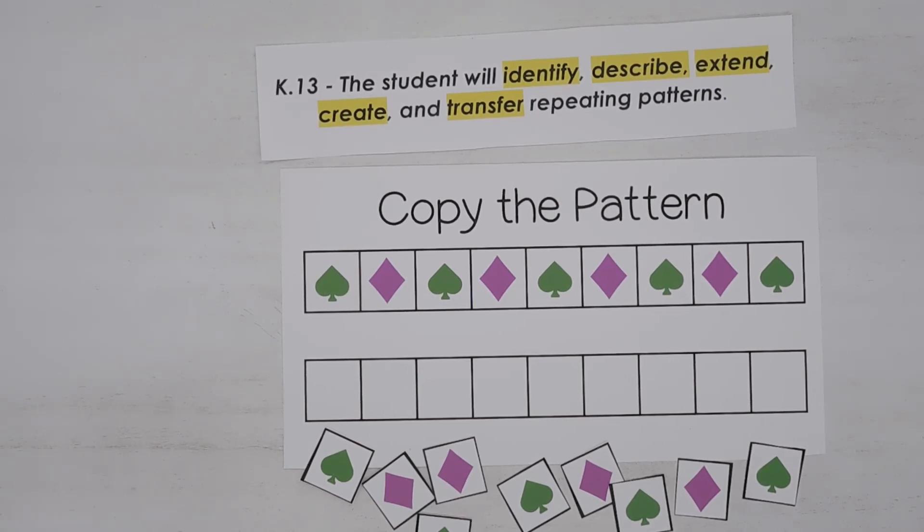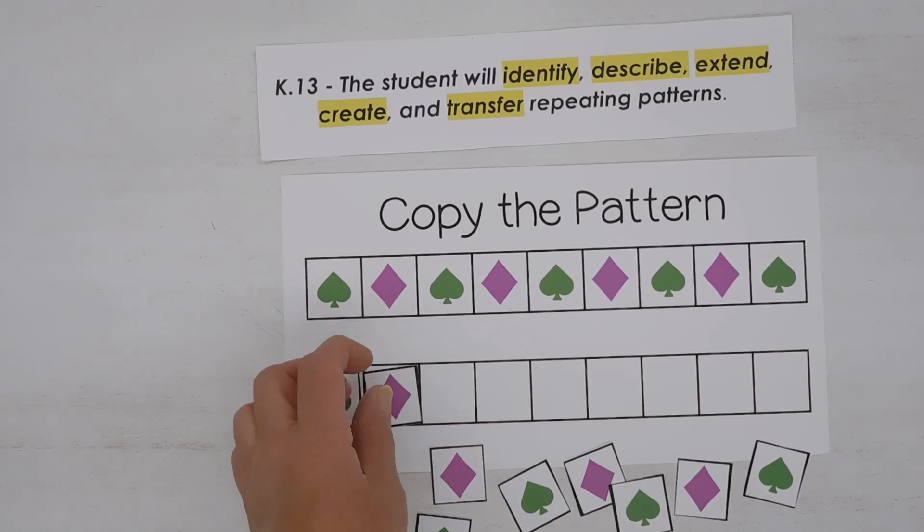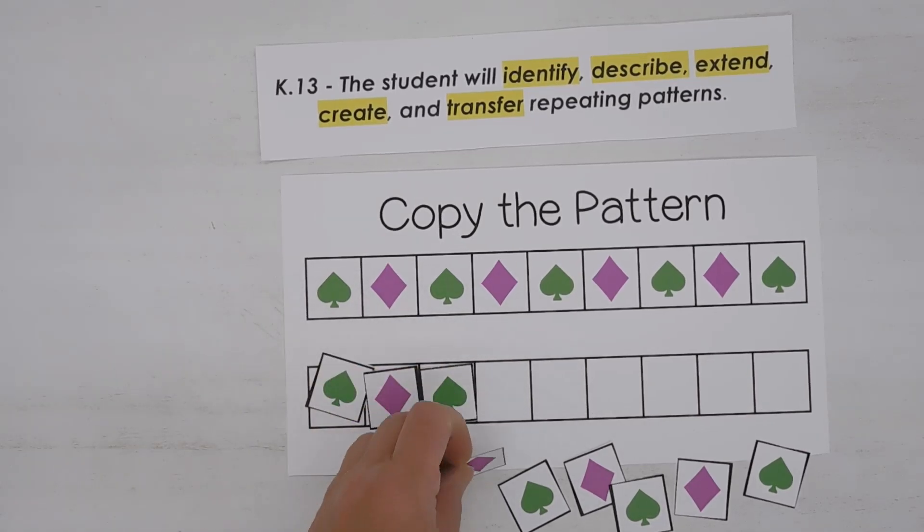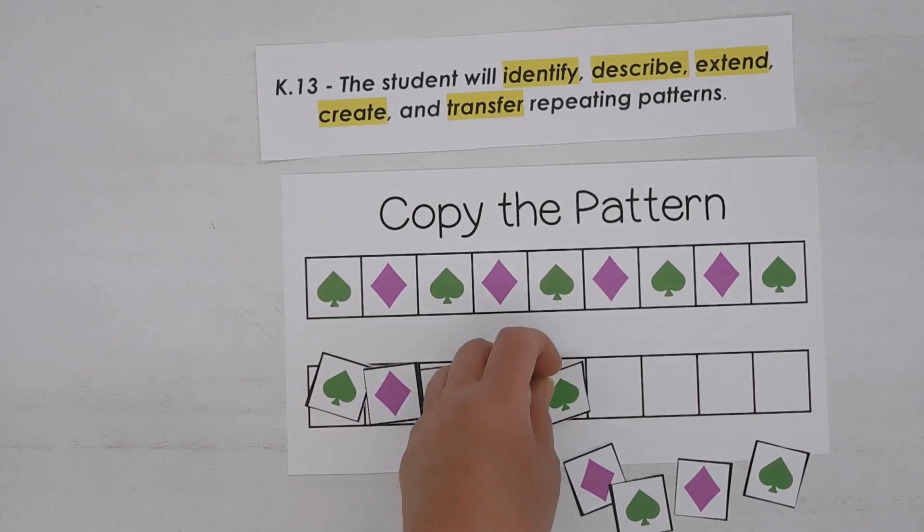Look at the activity sheet. It says copy the pattern. So what the students would do is they would place the shapes in the empty spaces just below the pattern that's showing.